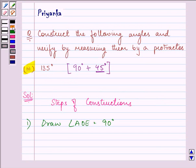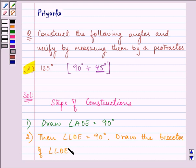The second step is then angle LOE is also 90 degrees. Now we will be drawing the bisector of angle LOE.